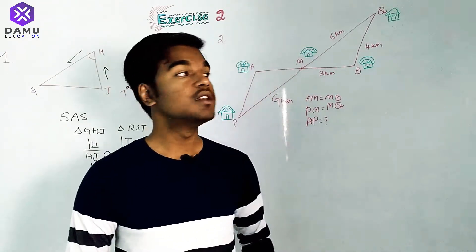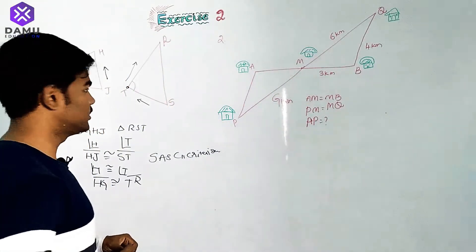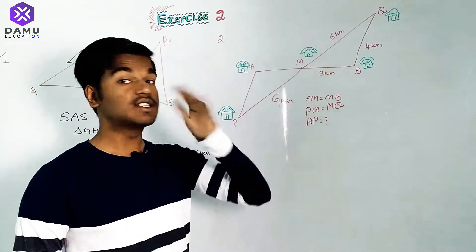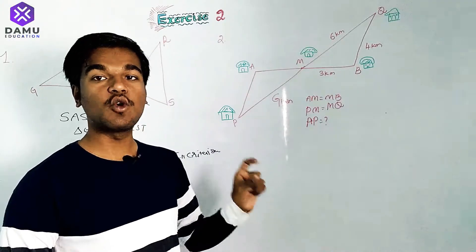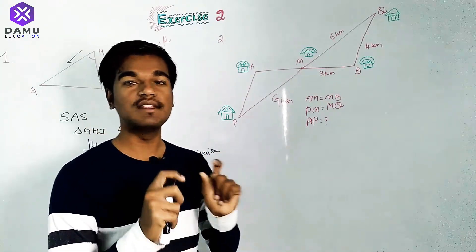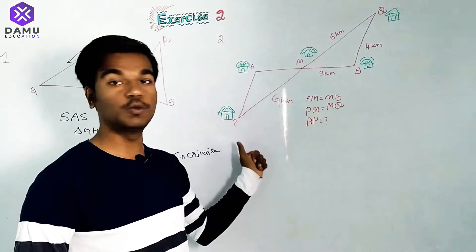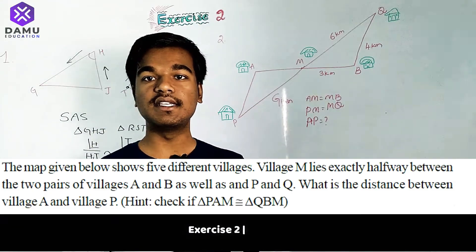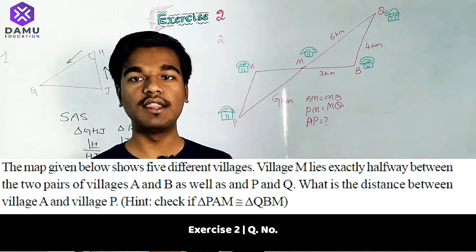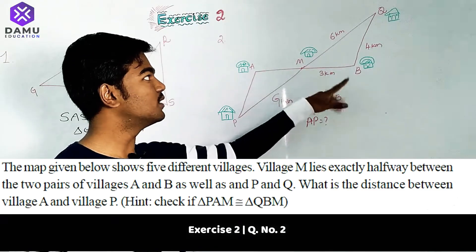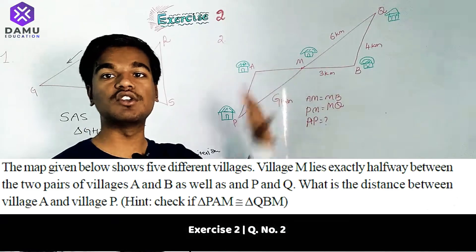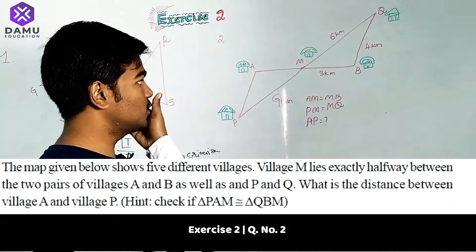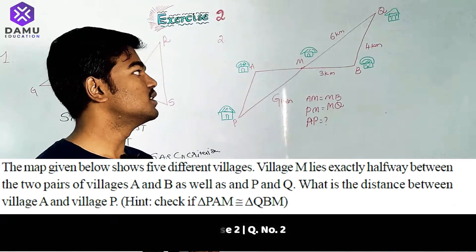The second question involves villages labeled P, A, M, B, and Q. M is a village located at the same distance from both A and B. P and Q are midpoints equidistant from all the surrounding villages. The villages are indicated with letters on the diagram.